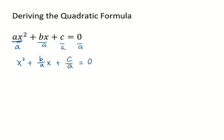Now I'm going to complete the square on these two terms. So let me move this constant term to the other side. So it will become negative c over a on the other side. And on the left side we have x squared plus b over a x.